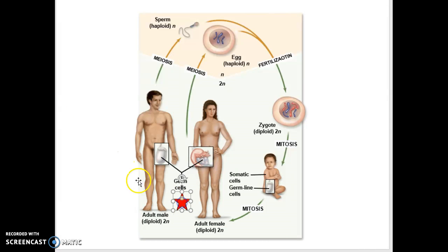These cells are the specific group of cells that will go through meiosis. Everything else on those individuals—the hair, the skin, the bone, the blood, the muscle, the nerve—all of those go through the cell cycle and that process of mitosis.